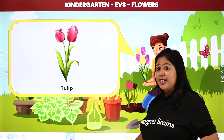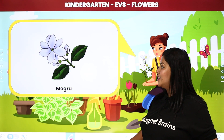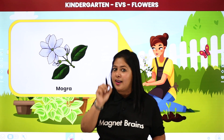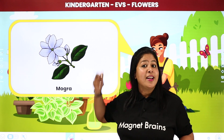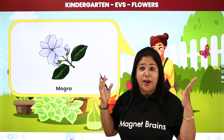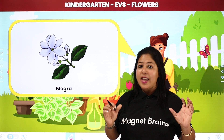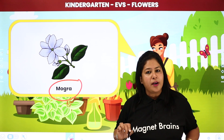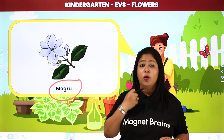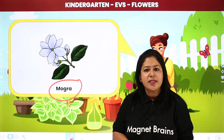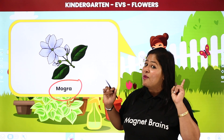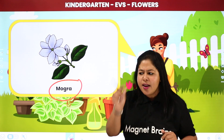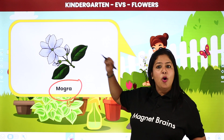Now let's see the next flower. Any guesses? Yes, this is mogra. Chhote chhote se flower hota hai student, white color ke. Aur mogra ka kya lagati hain mamma log? Gajra — usko baalon mein apne hair ko decorate karti hain mogra ke gajra se. So this is mogra — M-O-G-R-A. Bahut achhi khushbu aati hai student mogra ke phoolon mein se. A very nice fragrance comes from mogra. White color, very small flower.